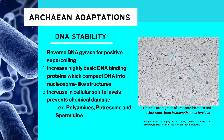The next adaptation involves achieving DNA stability. Reverse DNA gyrase is responsible for the positive supercoiling of the archaean DNA, which reduces the amount of DNA exposed to the risk brought by extremely hot conditions. Similar to eukaryotic histones, highly basic DNA-binding proteins bind to the archaean DNA, compacting it into nucleosome-like structures. These proteins also maintain the double-stranded form of the archaean DNA. Cellular solute levels are increased to prevent chemical damage such as losing a nucleotide base through depurination and depyrimidination.